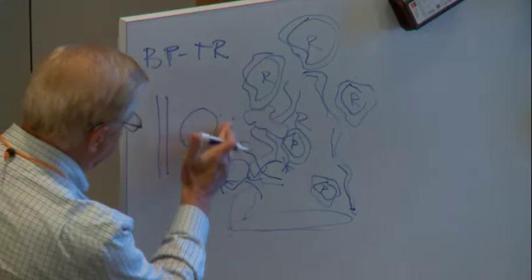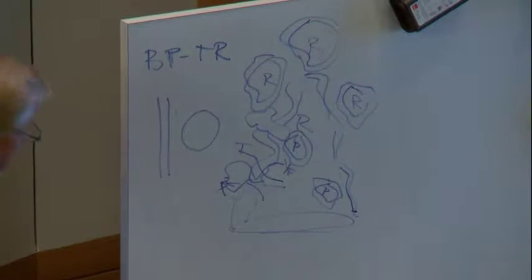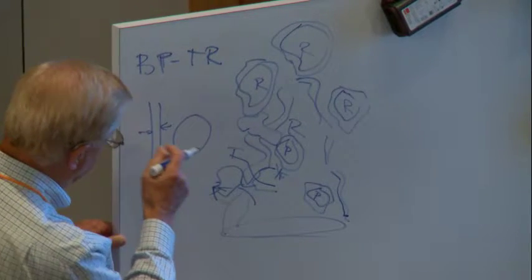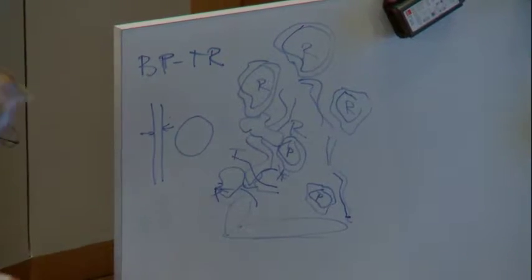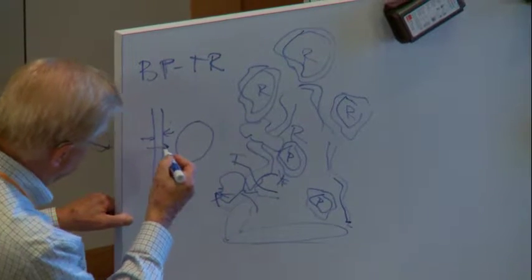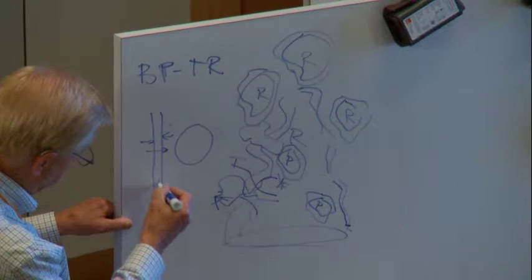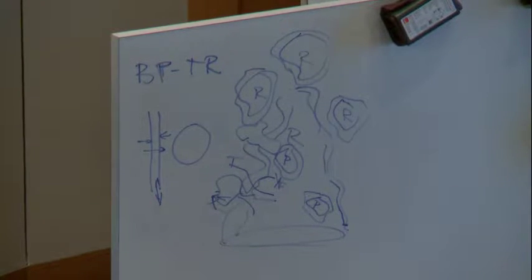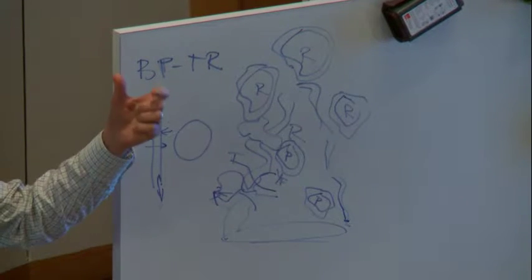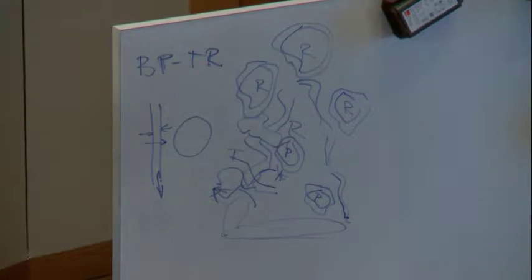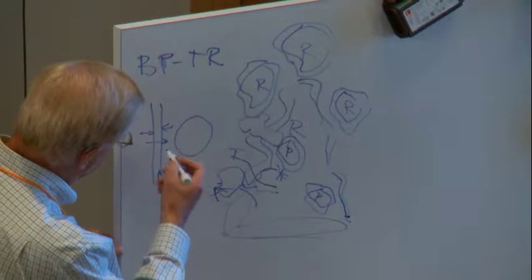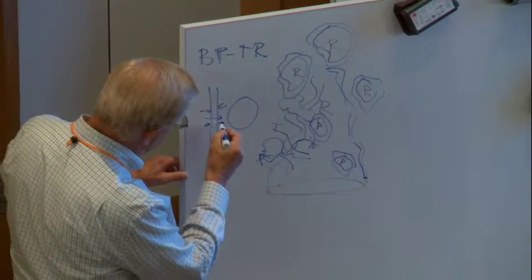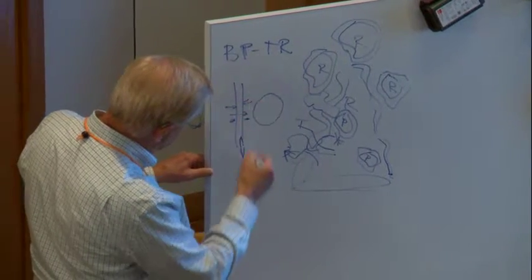The way we've defined it in our work, it's somewhat arbitrary, but Norbert Peters said that a flamelet is something in which the gradients in this direction are much higher than the gradients in this direction. So a flamelet is thin. It's thin in one direction compared to its dimension in the other direction. So when I say thin, it doesn't have to be the laminar thickness, but the thickness in this direction has to be a lot less than the thickness in that direction.